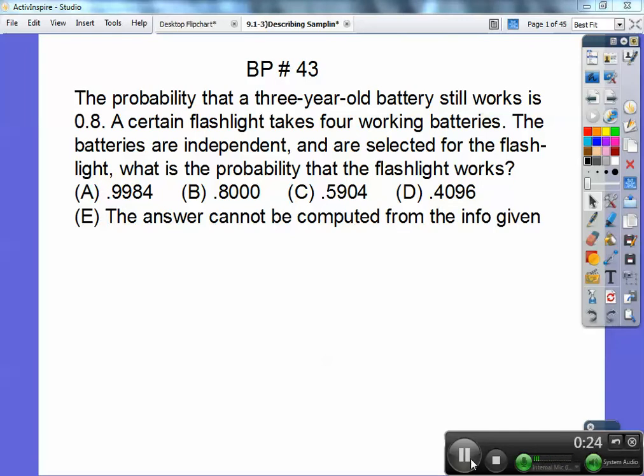Board problem 43, the probability that a three-year-old battery still works is 0.8. A certain flashlight takes four working batteries. The batteries are independent and are selected for the flashlight. What's the probability that the flashlight works? Since each one has a probability of 0.8, it's 0.8 to the 4th, so you get choice D on that.